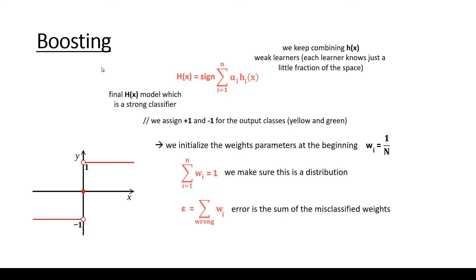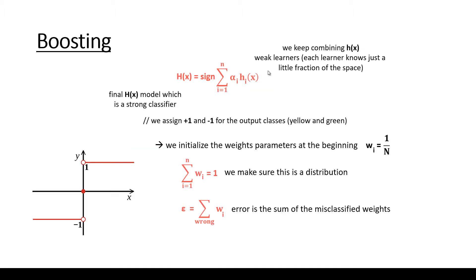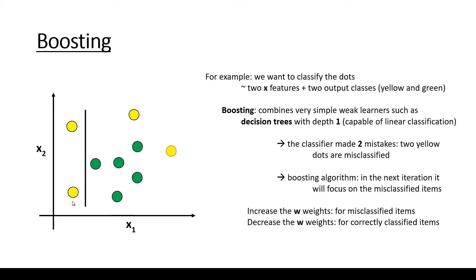Let's talk about the concrete equations as far as boosting is concerned. In the previous lecture we discussed a concrete illustration of how the boosting algorithm works. The basic principle is that we keep combining weak learners, denoted h(x). Each learner knows just a little fraction of the space — for example, the first h(x) classifier is able to separate the yellow dots from the green dots, and each subsequent weak learner knows another region of the space.